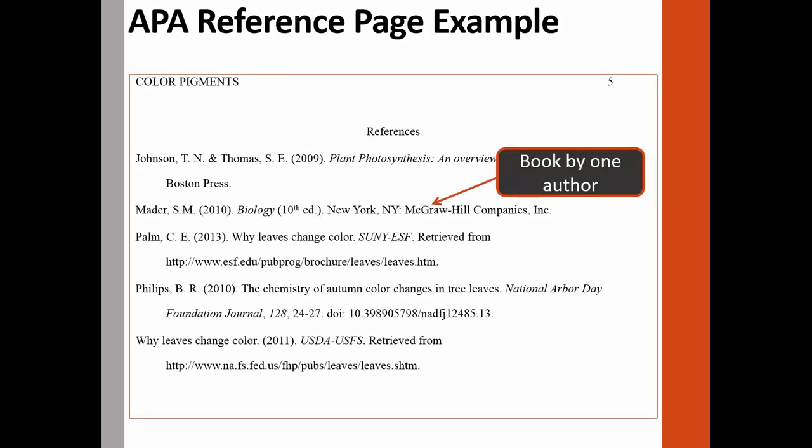Here is an example. We have the author's last name, a comma, and then the author's first and middle initial. Next is the copyright date in parentheses followed by a period. Then the title is italicized, and because this text has more than one edition, the version number appears in parentheses after the title — also followed by a period. Lastly, we have the location of publication, a colon, and the publisher's name.